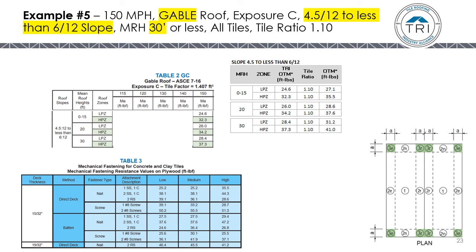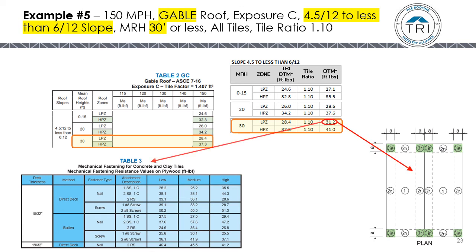For example five, we stay on gable roofs but go to a 4.5:12 to less than 6:12 slope, mean roof height to 30 feet. We look at Table 2GC to get our LPZ and HPZ uplift moments and factor in the tile ratio. The fastening methods in Table 3 will work for both the LPZ and the HPZ.